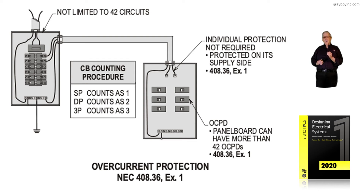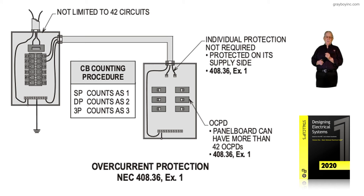But if that panel board was located outside the building — maybe in another building — and that was a feeder routed over to that building, then we would need a disconnect or a main in that panel board in accordance with 225.33 if you're having just a main installed.